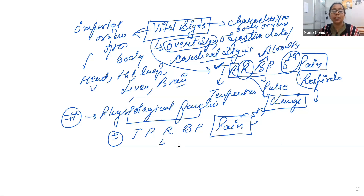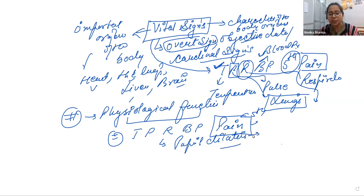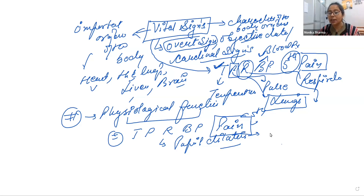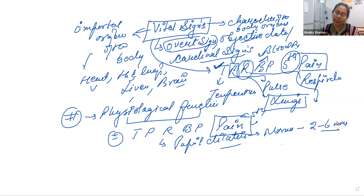Pupil dilation — is the pupil dilated or not? If the pupil is dilated, it means something is happening with the person's internal organs and the person might be in danger. The normal pupil dilation range is 2 to 6 mm. If someone has a fixed, dilated pupil, it indicates immediate death of the individual.